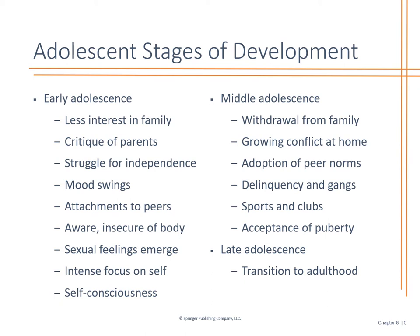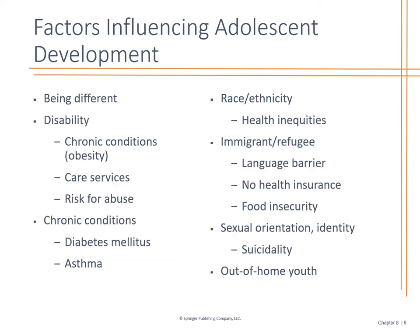In late adolescence, as they transition into adulthood, factors that influence this include disability. Obesity is a chronic condition with a significant effect on adolescent development. High risk for abuse of alcohol, drugs, suicide, depression, and bullying — these are very important things to address. We're also seeing diabetes, worsening asthma, high cholesterol, and hypertension in this population. It's very important to keep up with follow-through, monitoring vital signs, monitoring lab work, and encouraging them to talk to you.